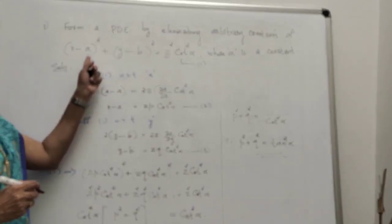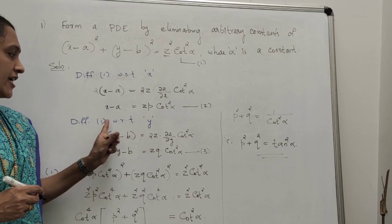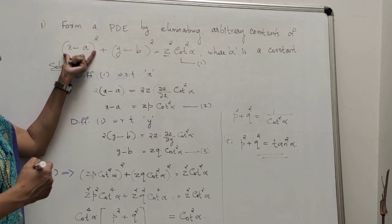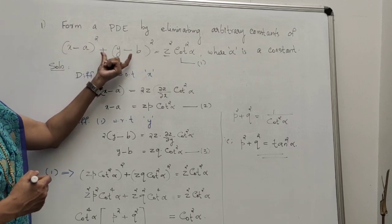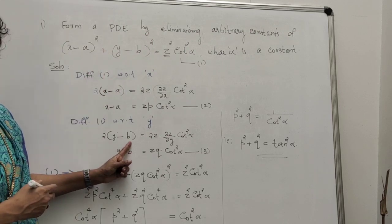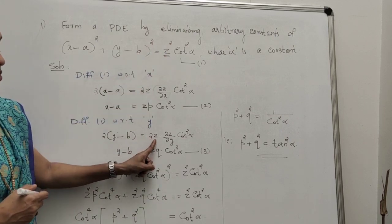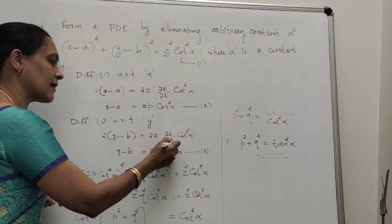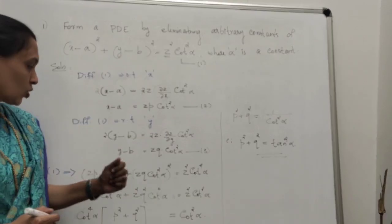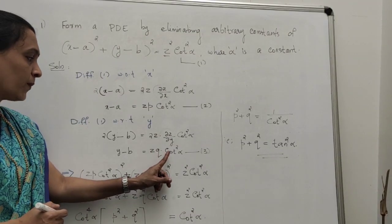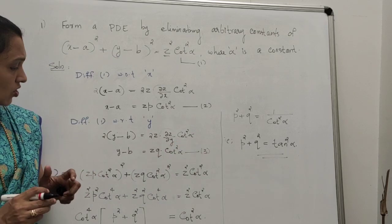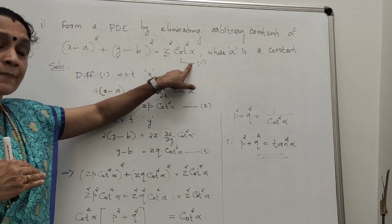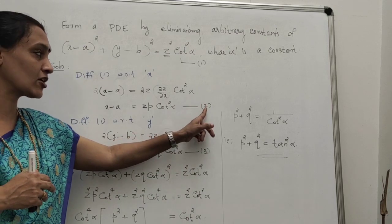Now differentiate equation 1 with respect to y. The first term (x - a)² becomes 0. We get 2(y - b) = 2z · (∂z/∂y) · cot²α. Replacing ∂z/∂y with q and cancelling 2, we get y - b = z · q · cot²α. Put this as equation 3.